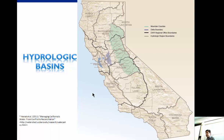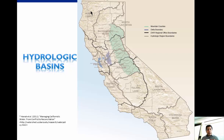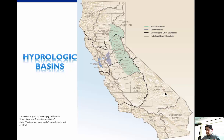So we have 10 hydrologic basins. This is how the Department of Water Resources divided the territory. We have the Sacramento, San Joaquin, Tulare — all of them drain into San Francisco Bay and then out into the sea — as well as the North Coast, Central Coast, South Lahontan, North Lahontan, Colorado, and the South Coast.